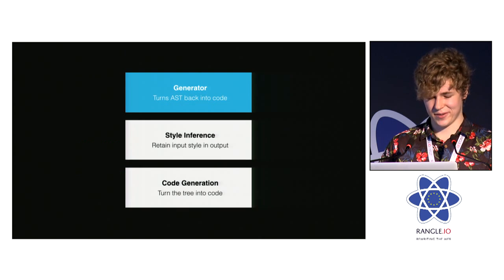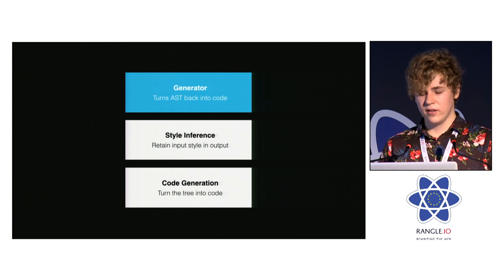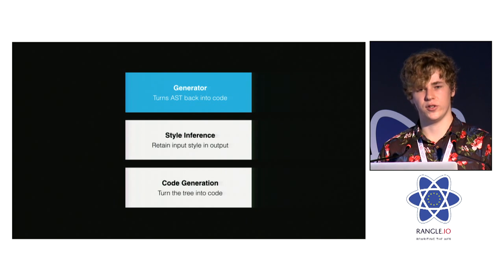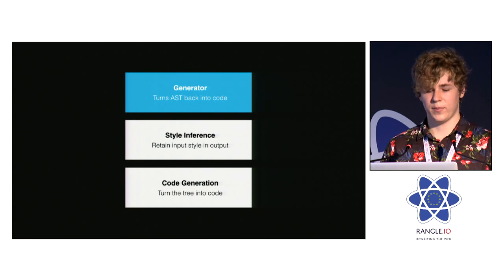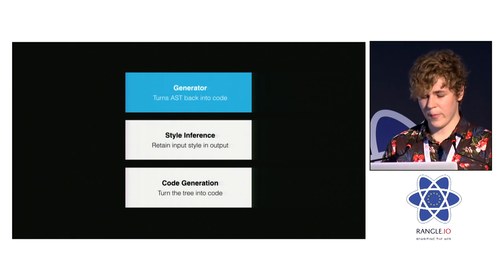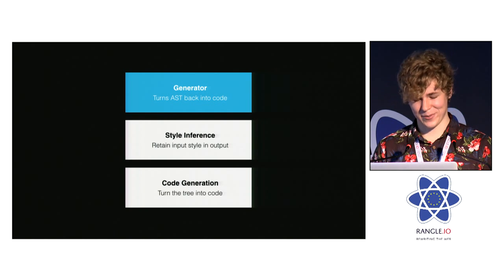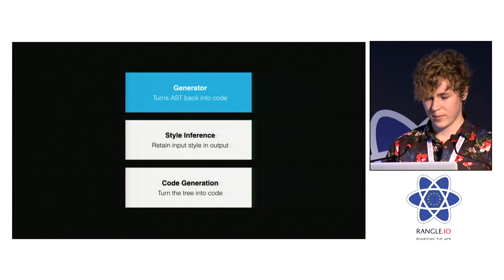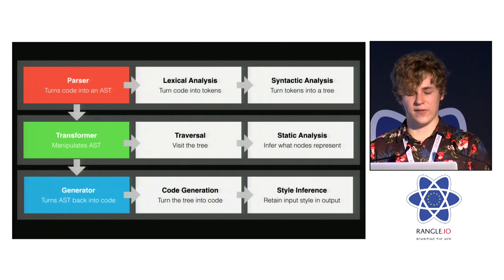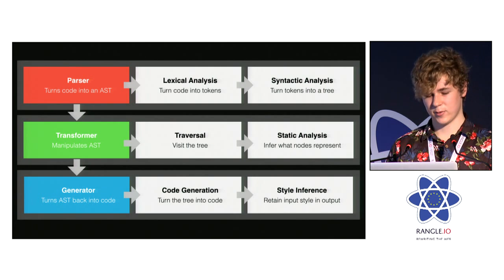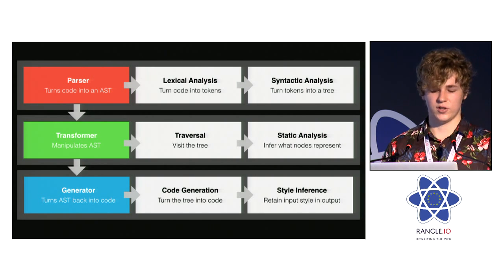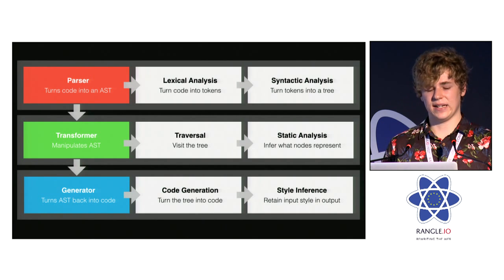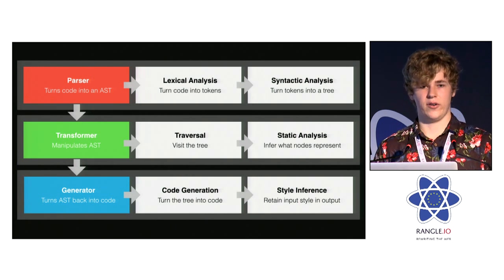Let's move on to generation. There are two phases of the generator: it infers the style of the original code — things like what type of quotes you use or what indentation — and then the actual code generation, which turns the tree into code based on that inferred style information. This is an overview of the entire flow Babel goes through: the parser handles lexical analysis and syntactic analysis, then passes it to the transformer, which traverses the tree, manipulates it, performs static analysis, and gives the AST to the code generator to turn back into code.